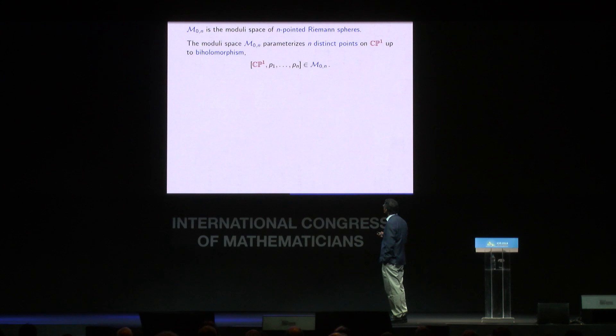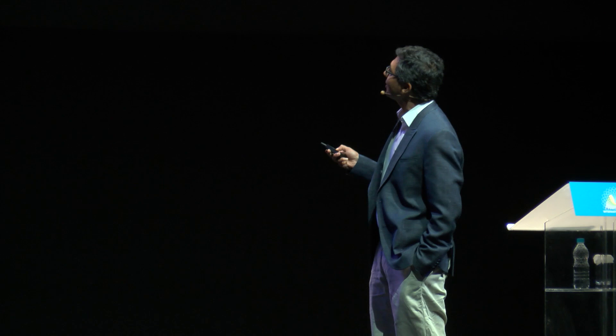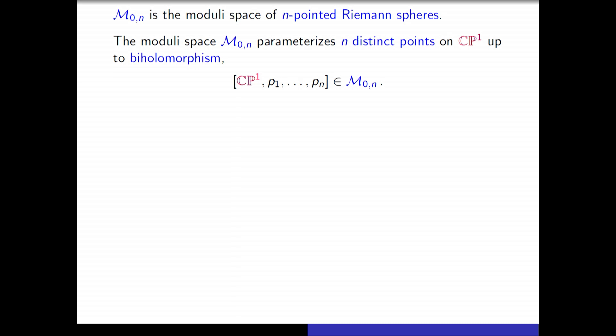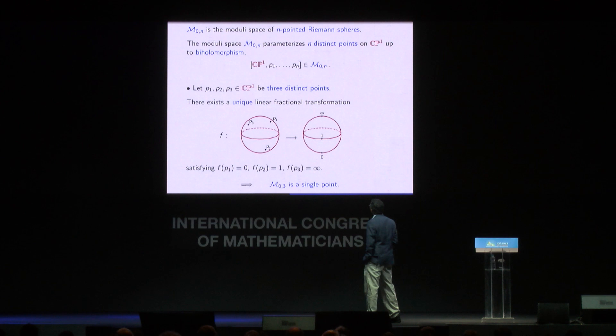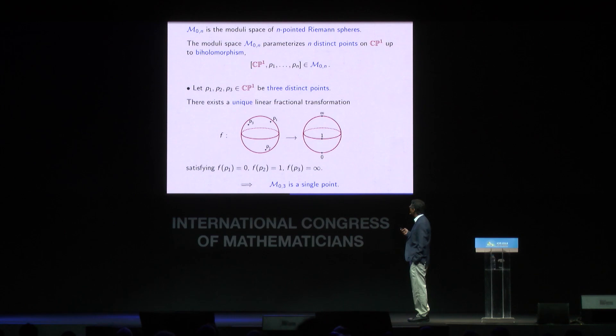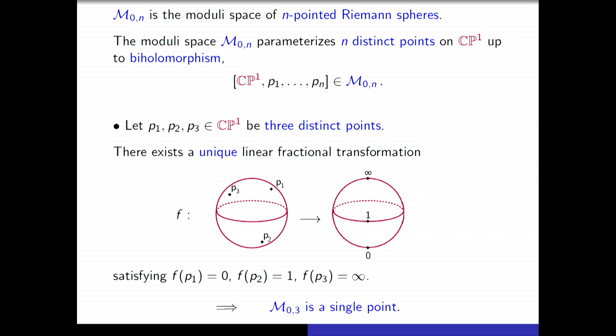The simplest moduli space we start with is M_{0,n}, the moduli space of n-pointed Riemann spheres. The 0 indicates genus 0, and n is the number of points. This moduli space parametrizes configurations of exactly n distinct points on the Riemann sphere CP^1, up to biholomorphism — that is, up to those linear fractional transformations. The first case is three points: there exists a unique linear fractional transformation taking any three distinct points to 0, 1, and infinity. So up to biholomorphism there is only one configuration of three distinct points, and this moduli space is a single point.